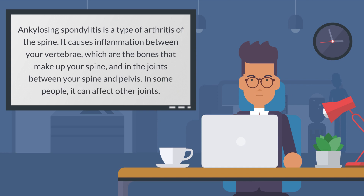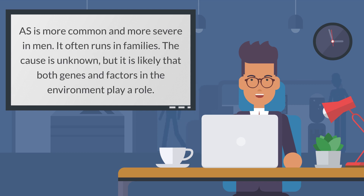Ankylosing spondylitis is a type of arthritis of the spine. It causes inflammation between your vertebrae, which are the bones that make up your spine, and in the joints between your spine and pelvis. In some people it can affect other joints. It is more common and more severe in men, and it often runs in families.